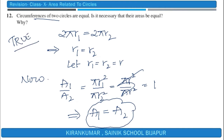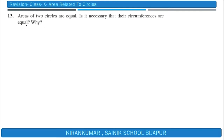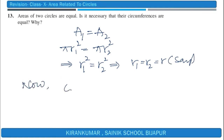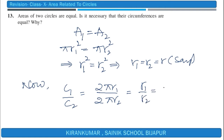Since r₁ = r₂, their areas are also equal, so statement 12 is true. For question 13: if the areas of two circles are equal, is it necessary that their circumferences are equal? If πr₁² = πr₂², then r₁² = r₂², so r₁ = r₂. The ratio of circumferences c₁/c₂ = 2πr₁/2πr₂ = r/r = 1, meaning c₁ = c₂. This statement is also true.